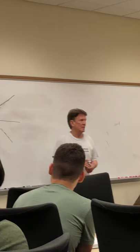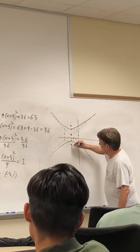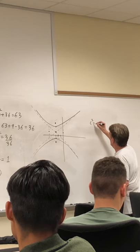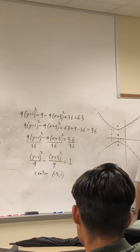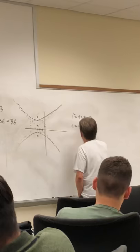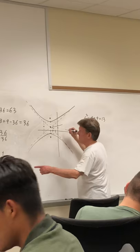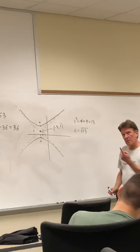The foci are going to be four plus nine somewhere in there. And we get the c squared by adding four plus nine, which is 13. So c is the square root of 13. So the center there is negative three, one.